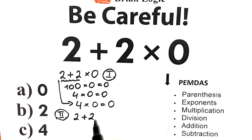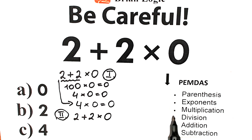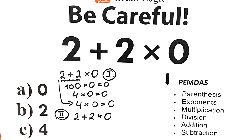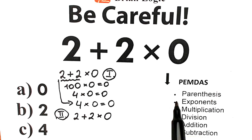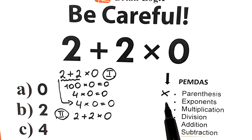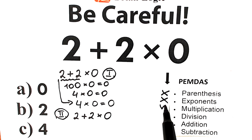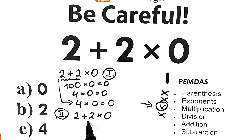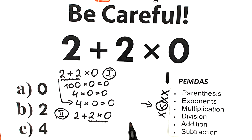We have 2 plus 2 times 0. We scan what elements we have. PEMDAS works from top to bottom in strict order — highest priority is parentheses, lowest is addition and subtraction. We don't have parentheses, so we skip that. No exponents either, so we skip that. Next is multiplication and division — and here we find our first step: multiplication. We apply this sign only to the two values directly involved: 2 and 0. We are not applying it to the entire left-hand expression.